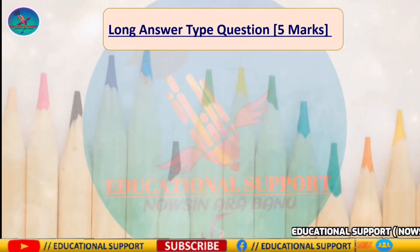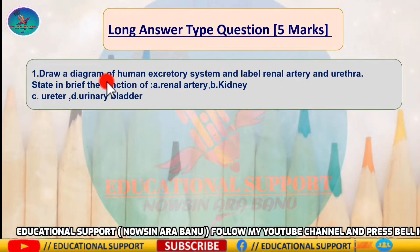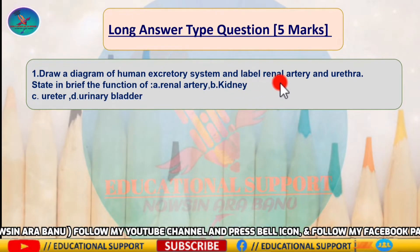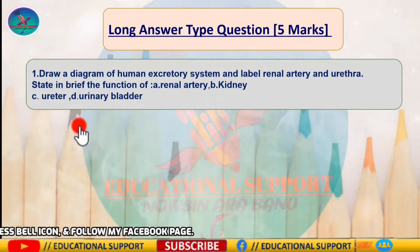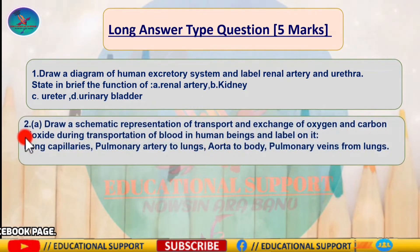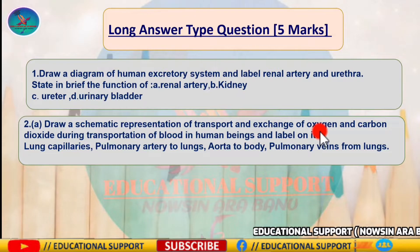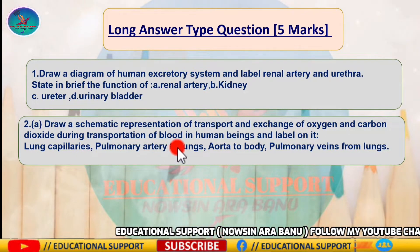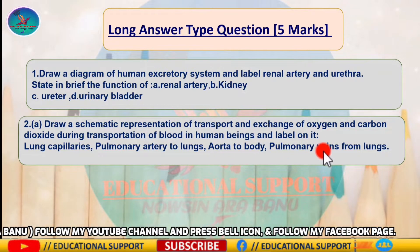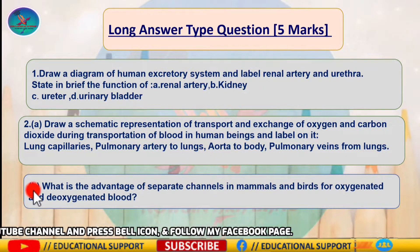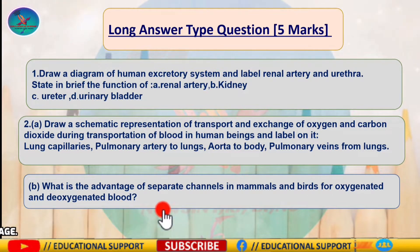Long answer type — five mark questions. Question one: draw a diagram of the human excretory system and label the renal artery and urethra; state briefly the function of the renal cortex and the urinary bladder. Question two: draw a schematic representation of transport and exchange of oxygen and carbon dioxide during transportation of blood in human beings, and label the lung capillaries, pulmonary artery to lungs, and pulmonary veins from lungs. Question two B: what are the advantages of separate channels in mammals and birds for oxygenated and deoxygenated blood?